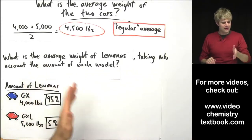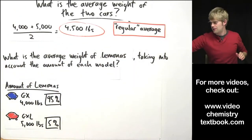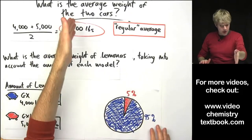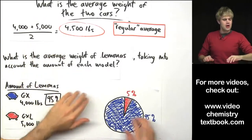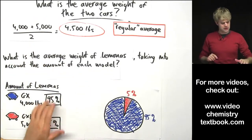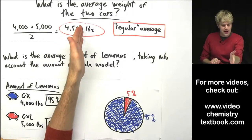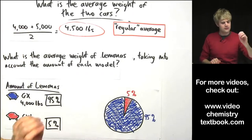Now we have to calculate an average that is different than the regular average that we did up here. Because in this case, we just found a number that was right between 4,000 and 5,000. But if we're taking into account the amount of each of these, is it really fair to say that the average weight is 4,500 right in the middle of these two weights?